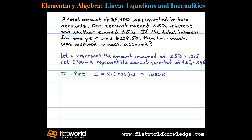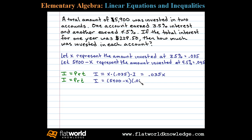Now we're going to do the same thing for the other account. It's the same formula — interest equals principal times rate times time — but in the account earning four and a half percent, the principal is five thousand nine hundred minus X.